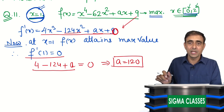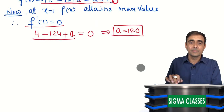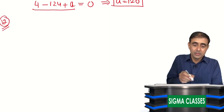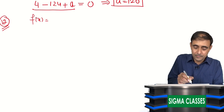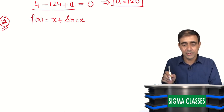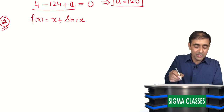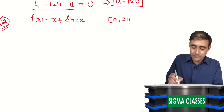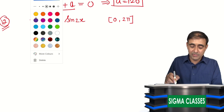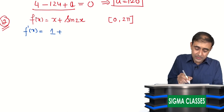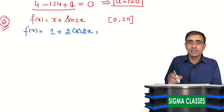Next is question 12, which is also an important question. f(x) = x + sin2x. Find the maximum and minimum value of this function on the interval [0, 2π]. So f'(x) = 1 + 2cos2x. We put f'(x) = 0, which gives 2cos2x = -1, so cos2x = -1/2.